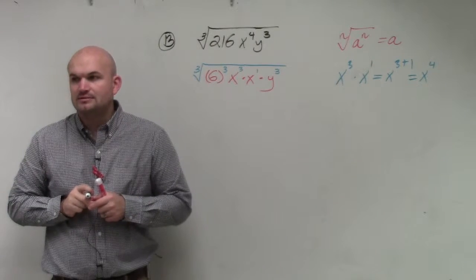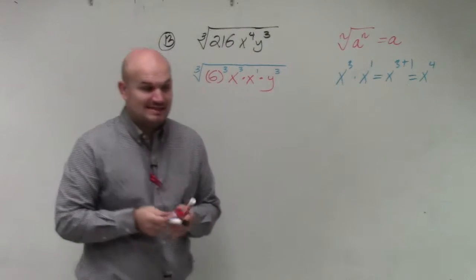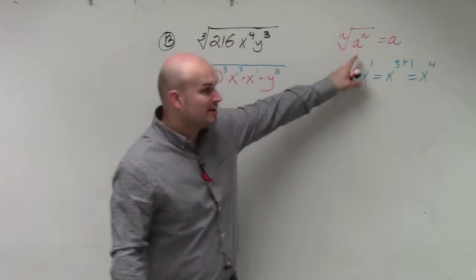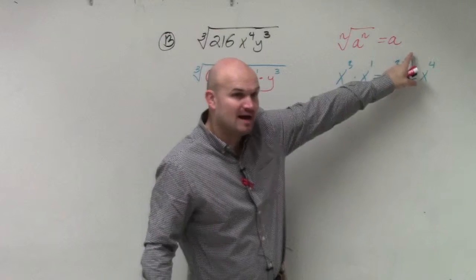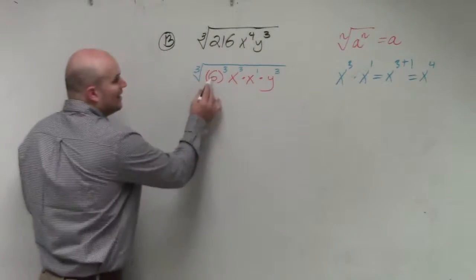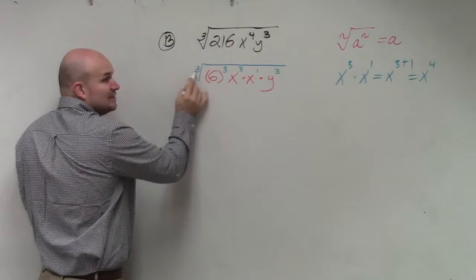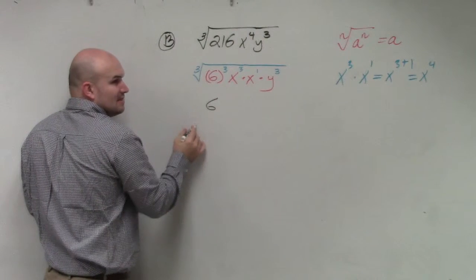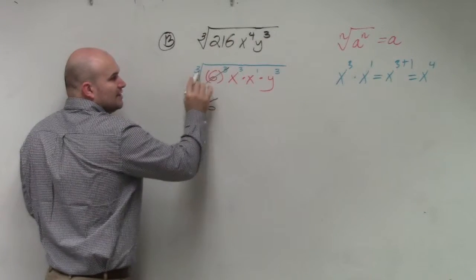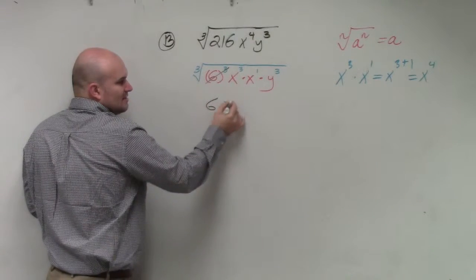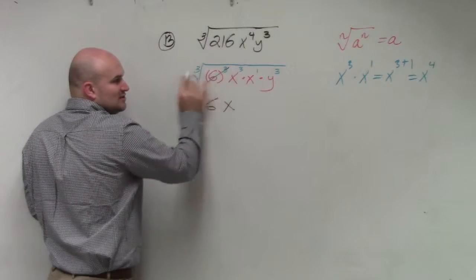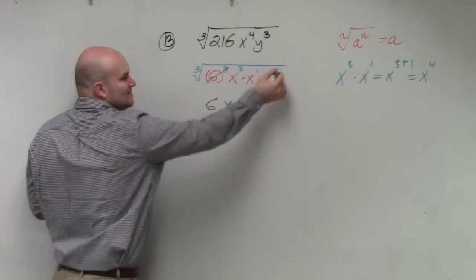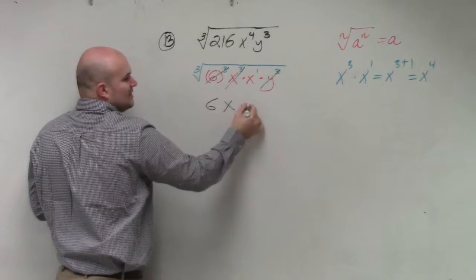Let's go back through our identity element. Remember, whenever I have an exponent raised to the same power as the index, it just equals my base. So I have 6 cubed, I'm taking the cube root of that, so that equals 6. The cube root of x cubed is just x. I can't take the cube root of x to the first, those are not the same, so I'm going to leave that under the radical. And the cube root of y cubed is just y.